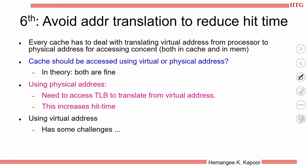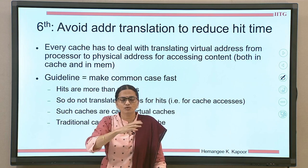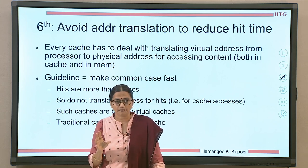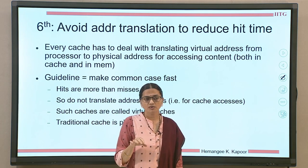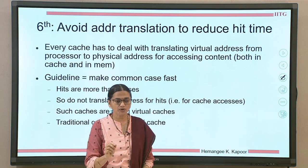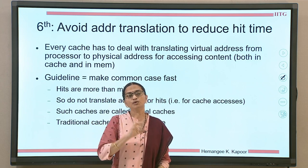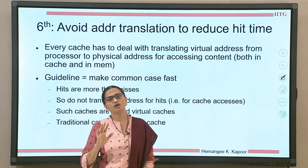In theory both are fine, but in practice if we first translate virtual to physical and then index into the cache, it adds significant latency — we go through the TLB, translate, then do the indexing, effectively increasing hit time. Virtual addresses are better because, from Amdahl's law, we should make the common case fast. Hits are more common than misses. So if cache hits are more common, we need not translate the address every time. Such caches that index as well as tag using virtual address are called virtual caches, while traditional caches using physical addresses are called physical caches.